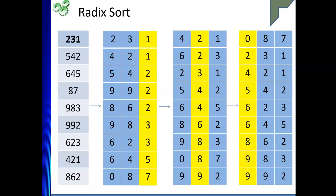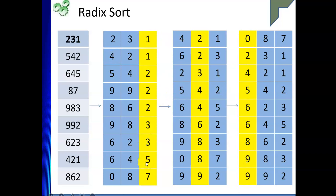Let us understand with an example. If we sort by the first digit it comes out as 231, 421, 542, and so on. Then we sort again by the second digit giving us 421, 623, and so on. Finally we sort by the most significant digit to get the final result. We are sorting digit by digit from the least to the most significant.